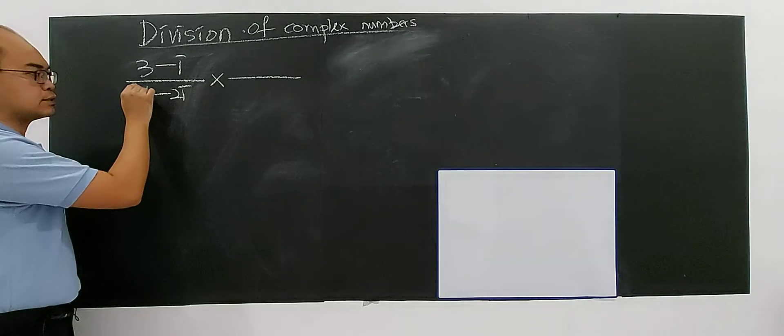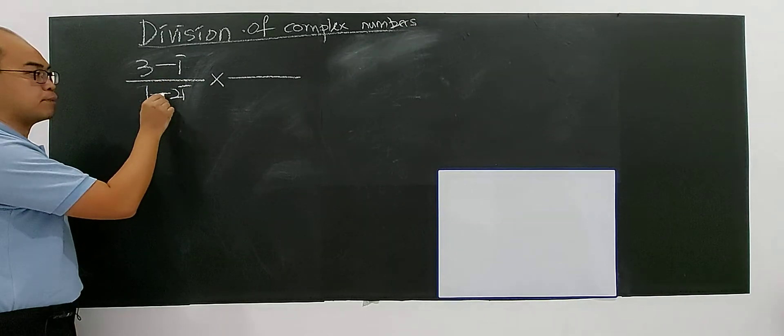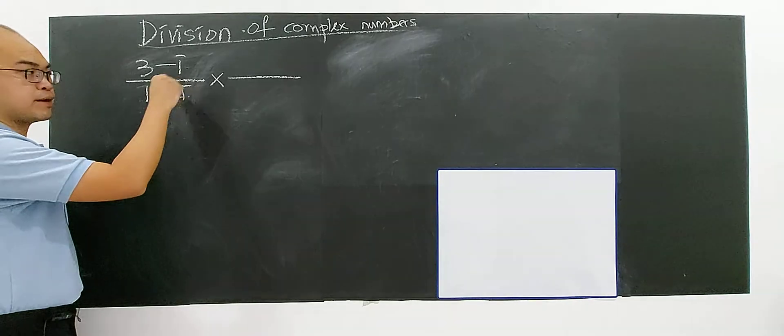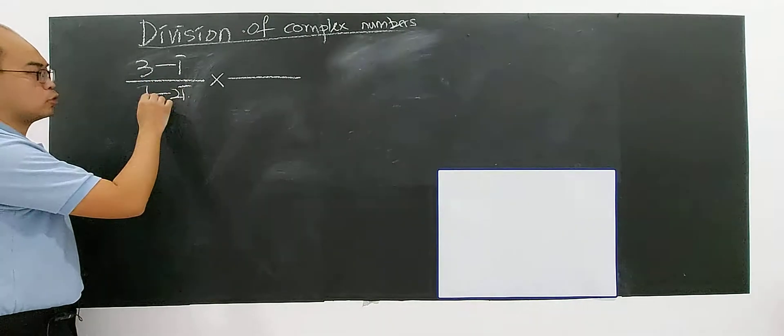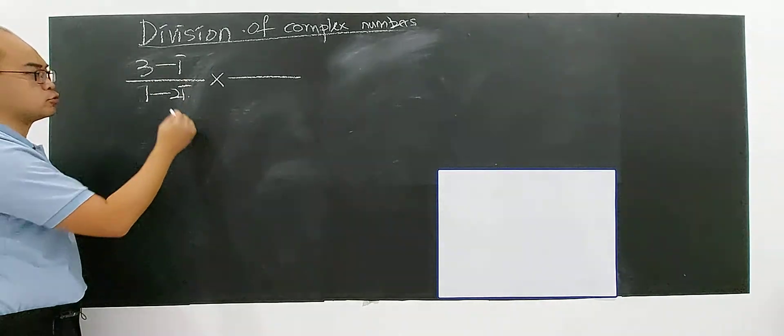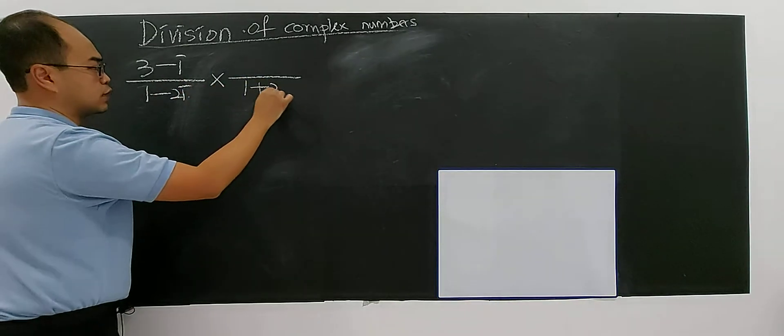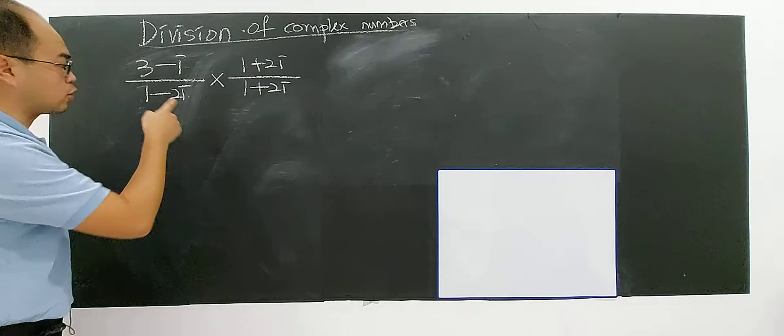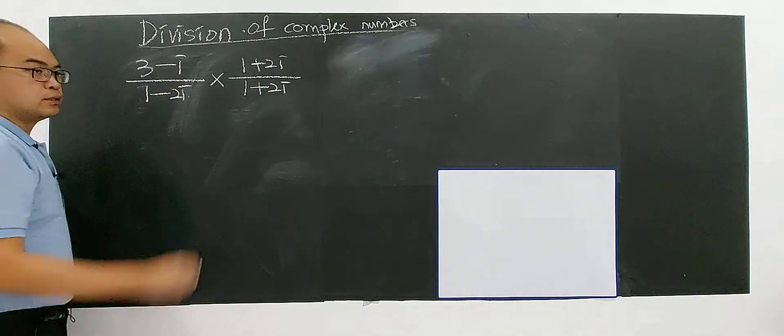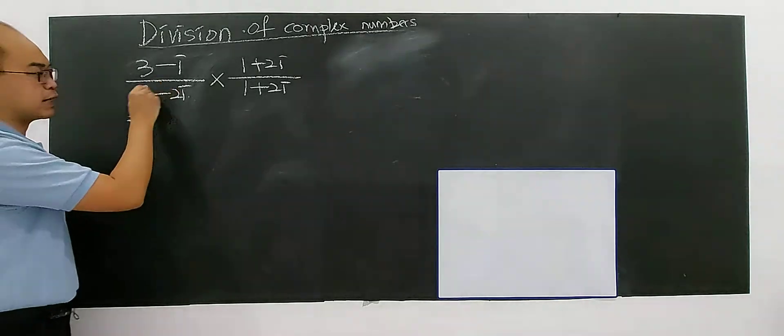This one is different. This is a complex number with a plus bi, it's not an imaginary number, it's a complex number. So I have to multiply with a complex conjugate. I will get 1 plus 2i and 1 plus 2i. Remember that it's a complex conjugate of the denominator, because you want to make sure that after you multiply, the denominator will transform to a real number.